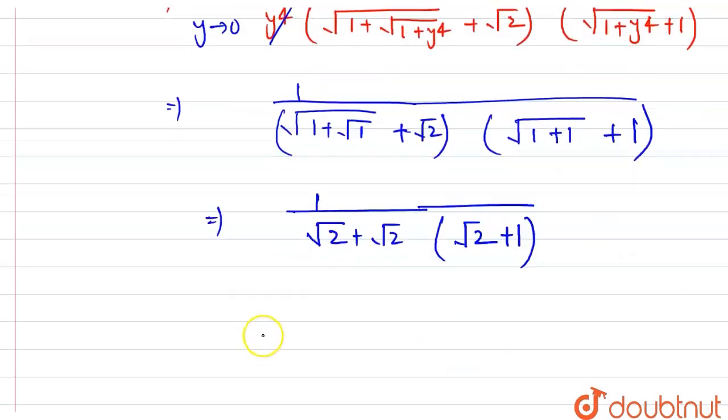From here we can write that our answer will become 1/(2√2(√2 + 1)). So this will be our answer to the limit.